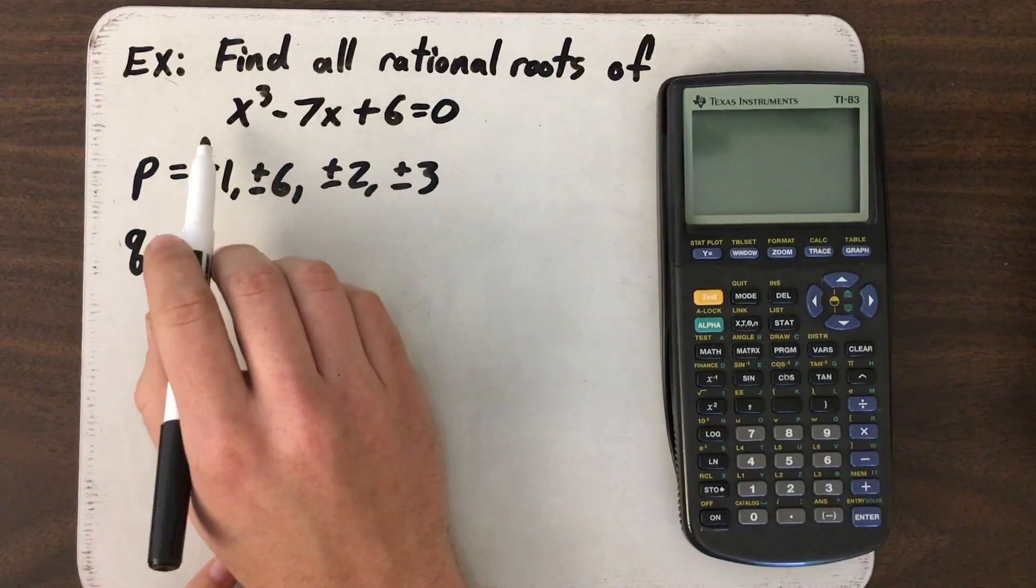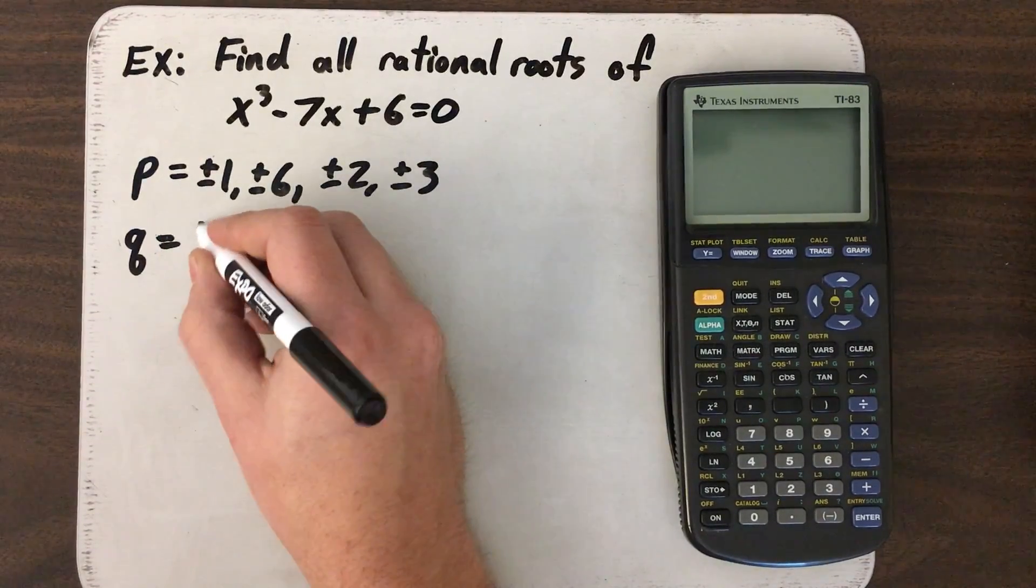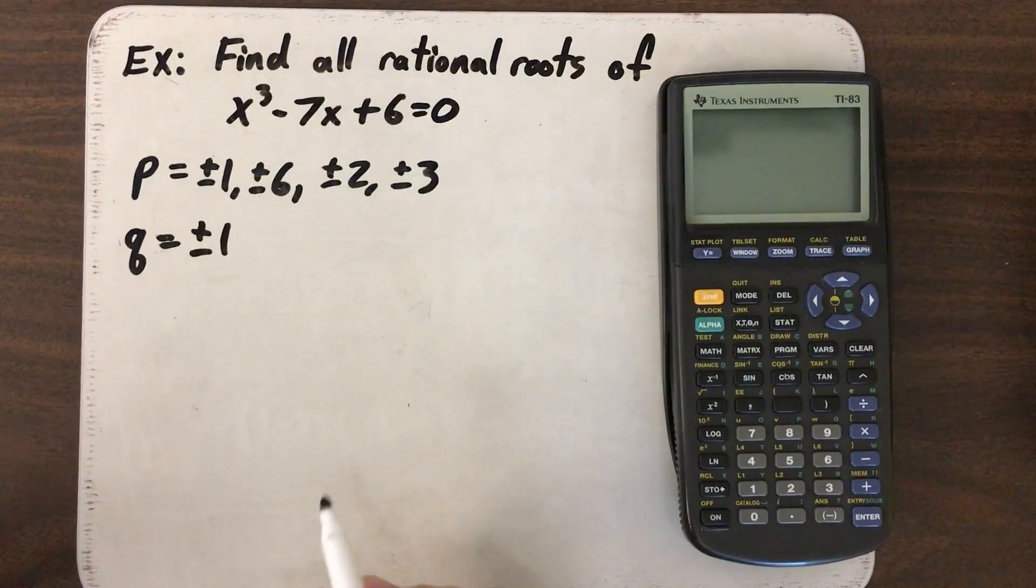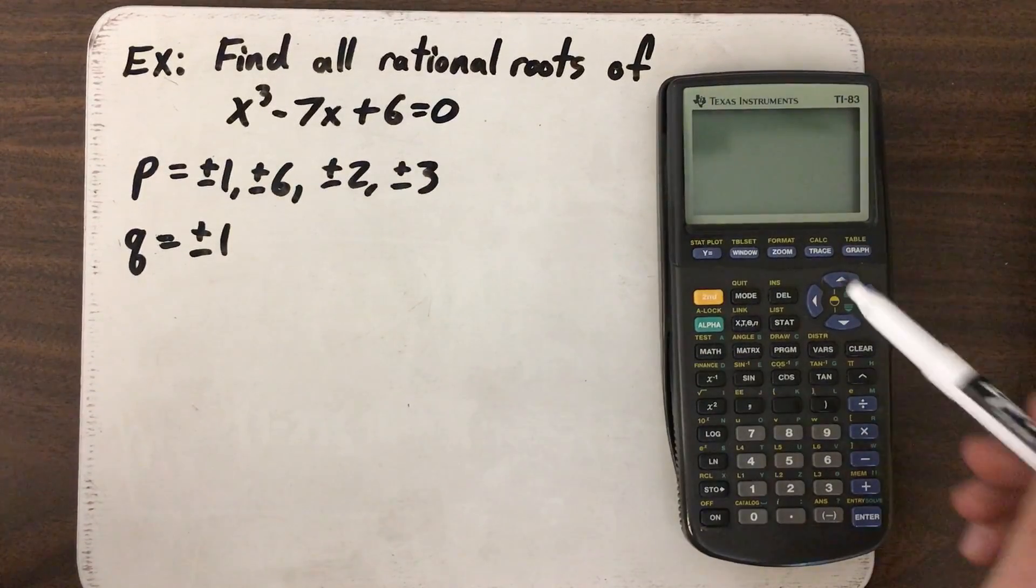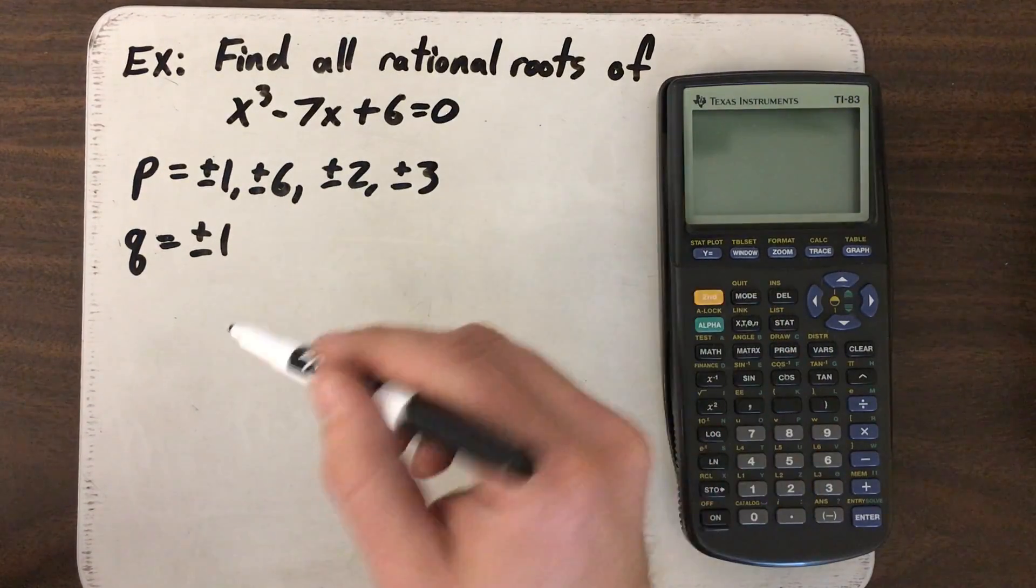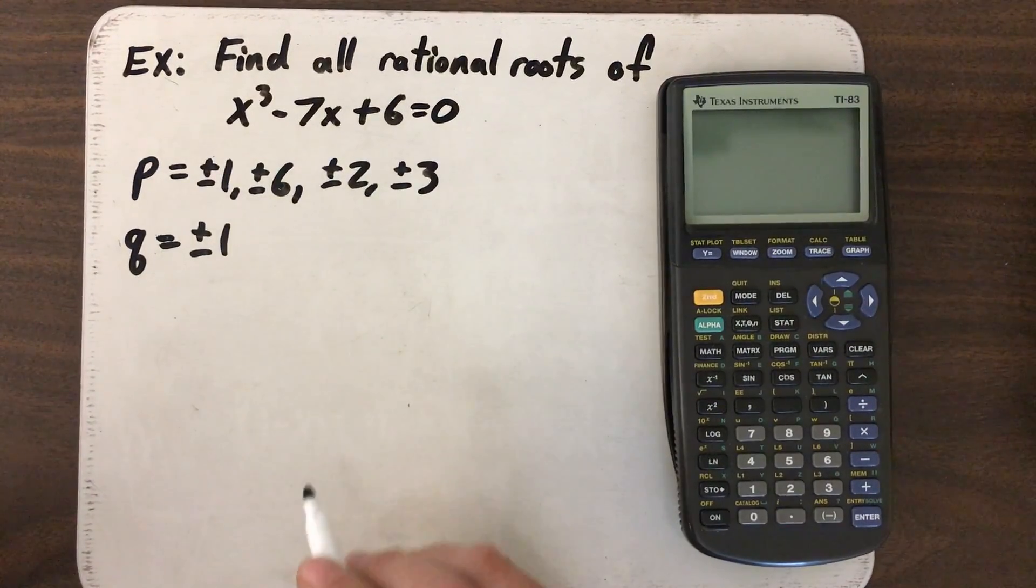Our Q values come from our leading coefficient, our A value, which in this case is one. So Q can only be plus or minus one. I chose to not do a terribly difficult problem for this because it was mostly about using the calculator and less about how to find these roots and these P and Q values.